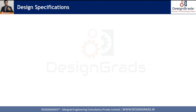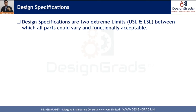Let's begin by answering the basic question: what is a design specification? Design specifications are two extreme limits — the Upper Specification Limit and the Lower Specification Limit. Between these two limits, all the parts can vary and still be functionally acceptable.